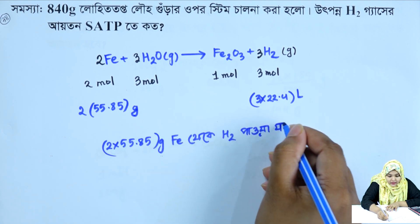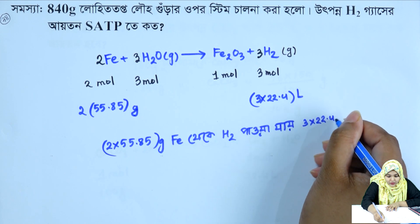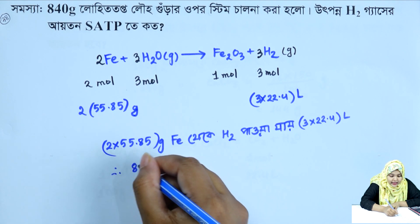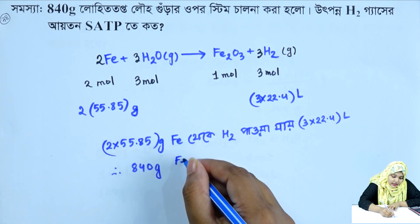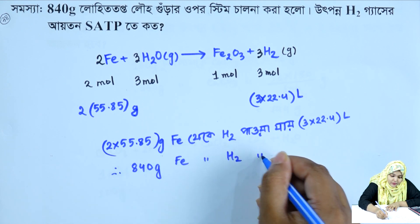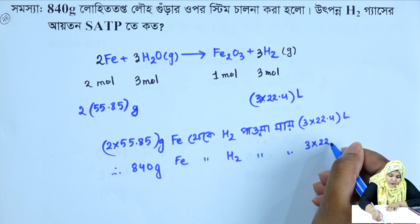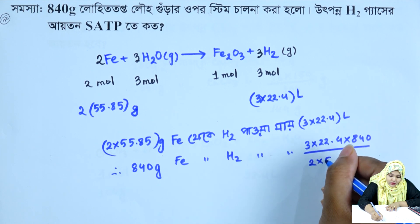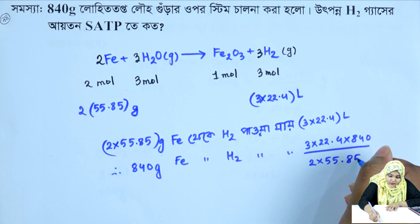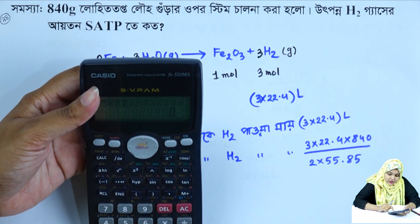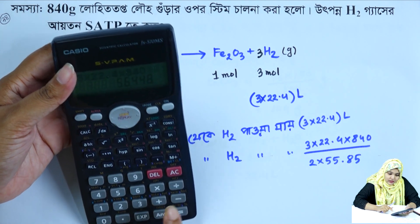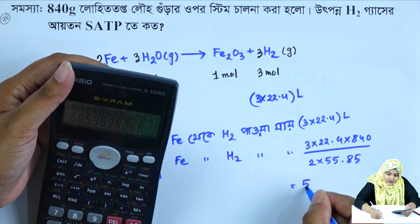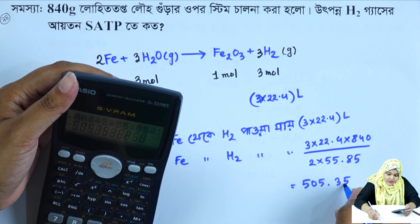Hydrogen power gel: 840 grams of iron, 3 into 22.4 liters. Divided by 2 into 55.85. So: 3 into 22.4 into 840 divided by 2 into 55.85. The result is 505.35 liters.